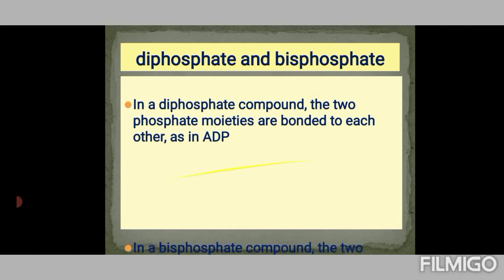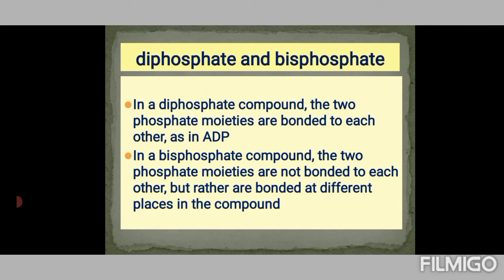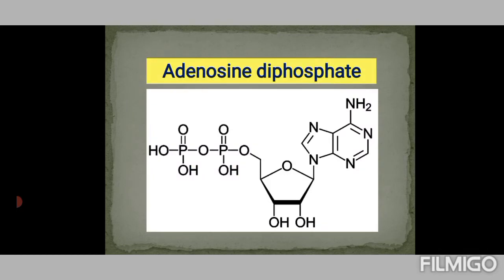Whereas in bisphosphate, it will also have two phosphate groups, but they are not attached to each other — they are placed at different locations in the same compound. We can see the structures here: in adenosine diphosphate, the phosphate groups are bonded to each other.